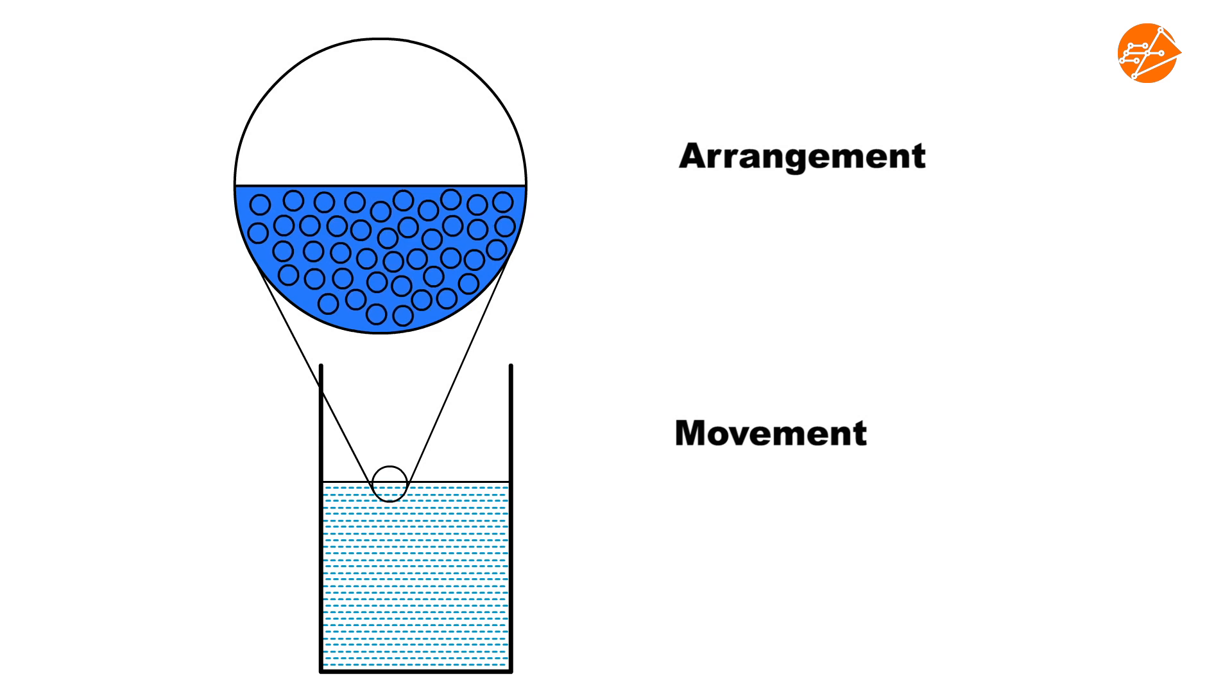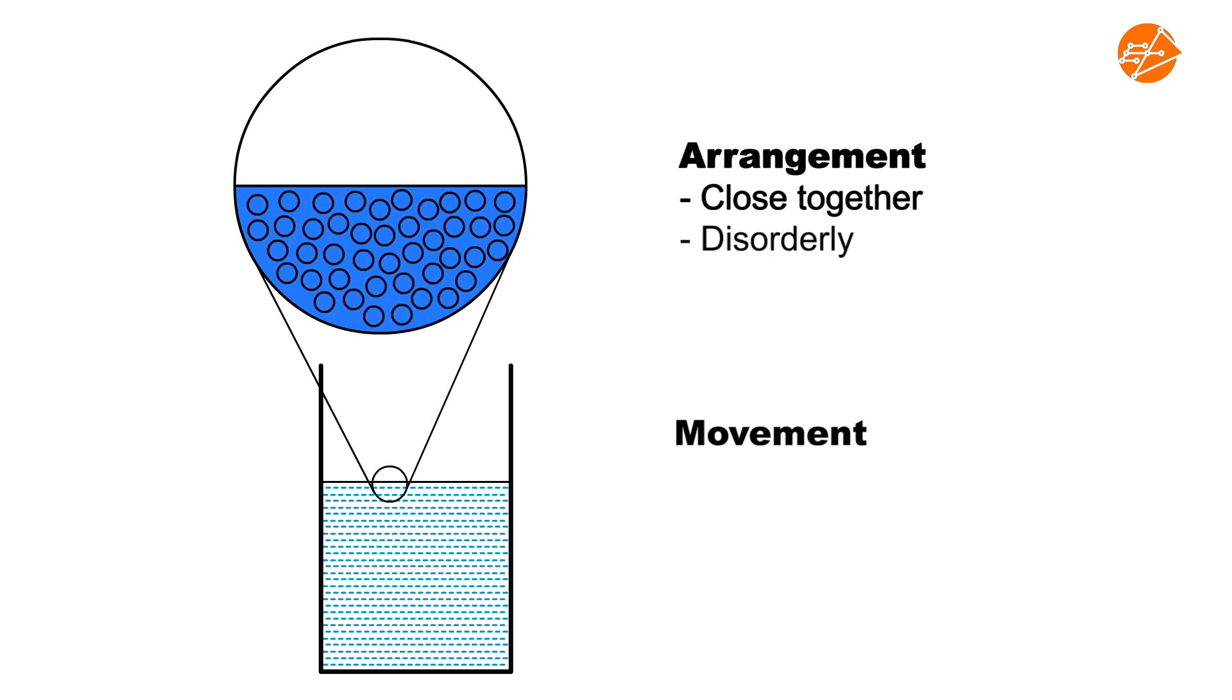In the liquid state, water molecules are arranged close together and in a disorderly manner. The water molecules can slide over each other and move throughout the liquid.